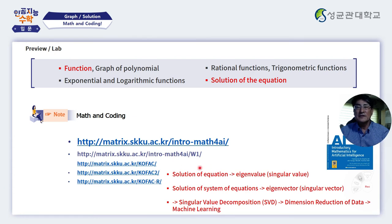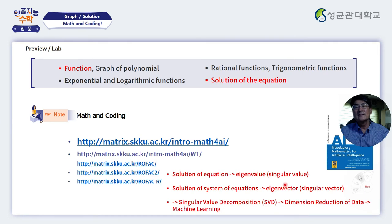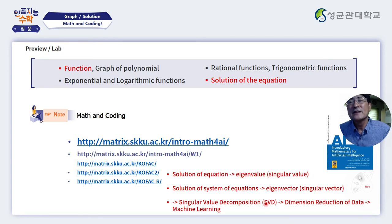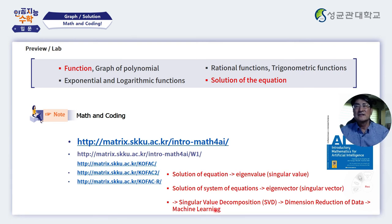In the first week we're going to learn how to solve equations and how to find the solution of equations. That will be used to find the eigenvalues of a matrix and also the singular values of a matrix. We will also learn how to find the solution of a system of equations, from which we can find the eigenvectors of a given matrix and also the singular vectors. With this knowledge, singular value decomposition will be understood, and then SVD will be used for dimension reduction of data, which is the essential part of machine learning.